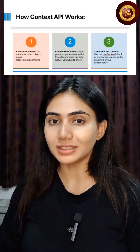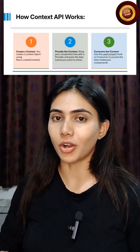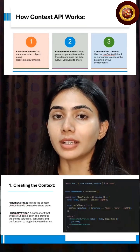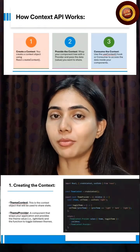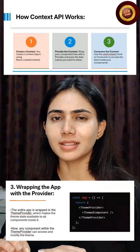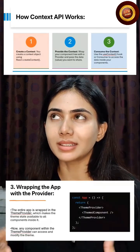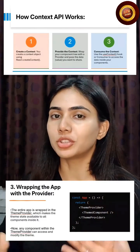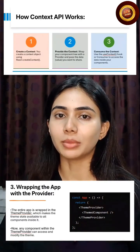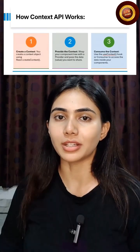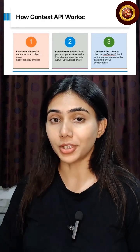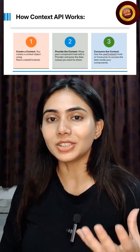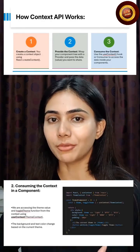To use context in your application you need to follow three steps. First, create the context. After creating the context, you need to create a provider — a provider is kind of a wrapper, and through this wrapper you pass down the information to your component tree.